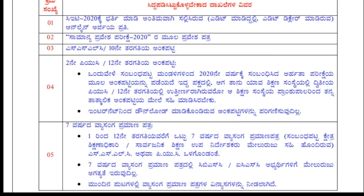The required documents include: the KCET Application Form, the KCET Admission Ticket, the SSLC Marks Card, and the PUC Marks Card. You can print these at a cyber cafe or submit them at a book store. You should also attach both your second PUC Marks Card and your SLC and PUC to the previous documents.